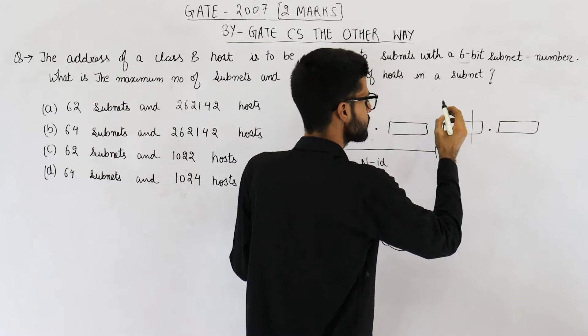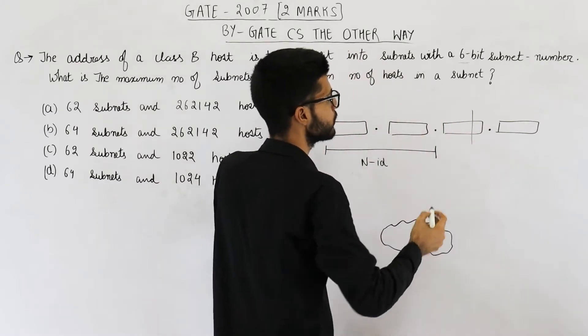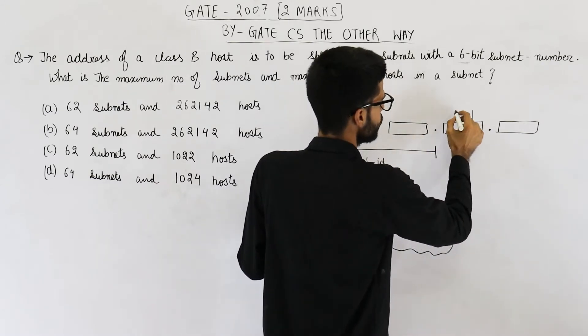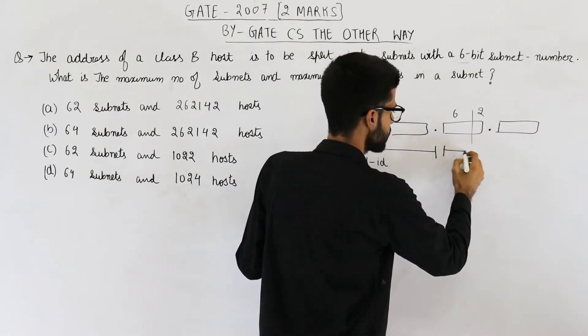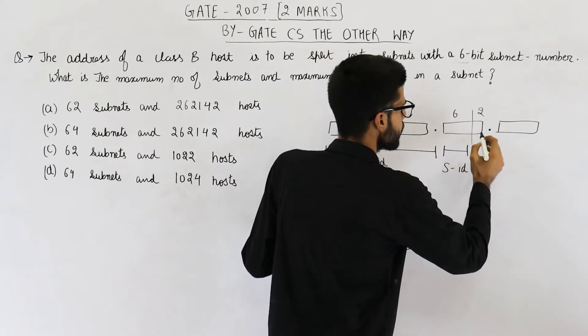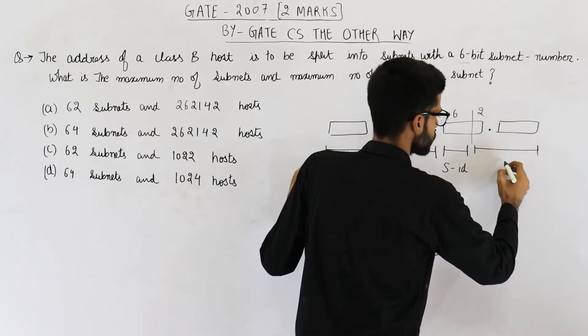So first 6 bits starting from here are borrowed. So from this octet, if you take away 6 bits, 2 bits will be left. So this part is now the subnet ID. And the remaining bits are host ID.